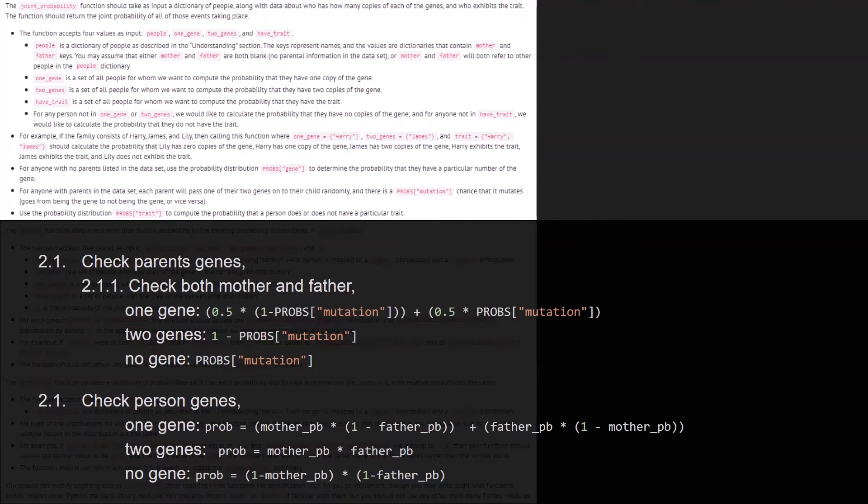Therefore, we check the person genes, so according to the expected number of genes for that person, we calculate the probability by multiplying the mother and father probability calculated before.